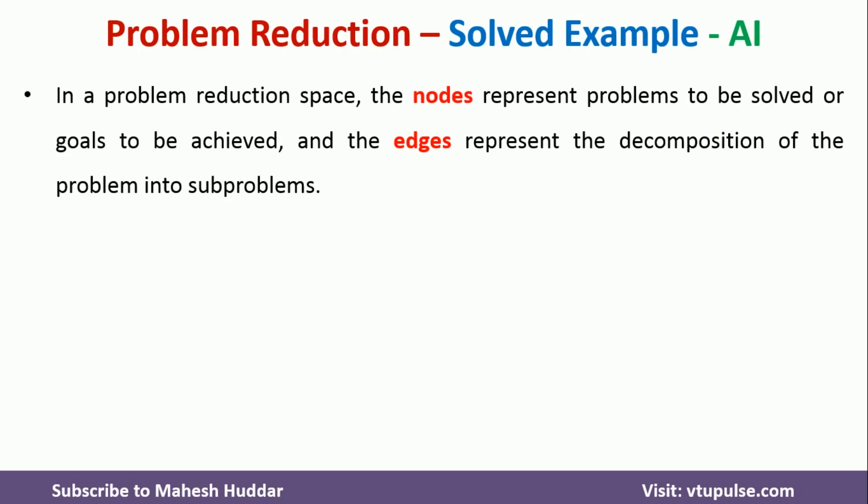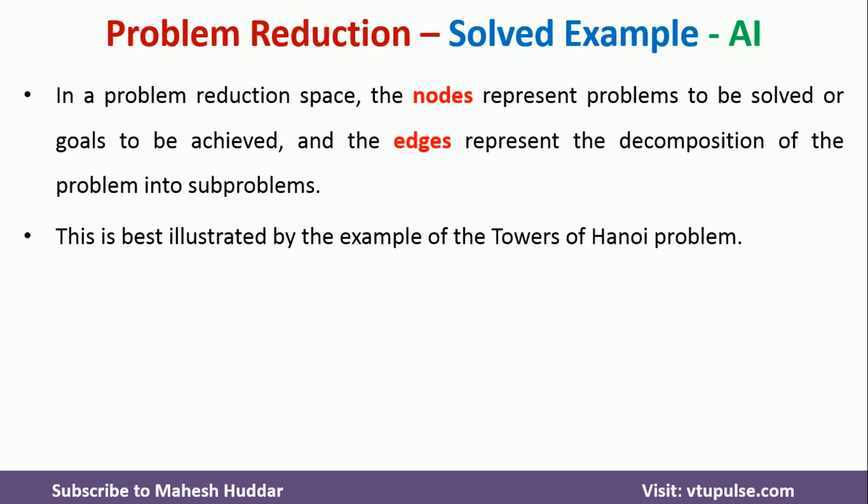In problem reduction space, the nodes represent problems to be solved or the goals to be achieved, and the edges represent the decomposition of a problem into sub-problems. To understand this, we will take an example of the Towers of Hanoi problem.